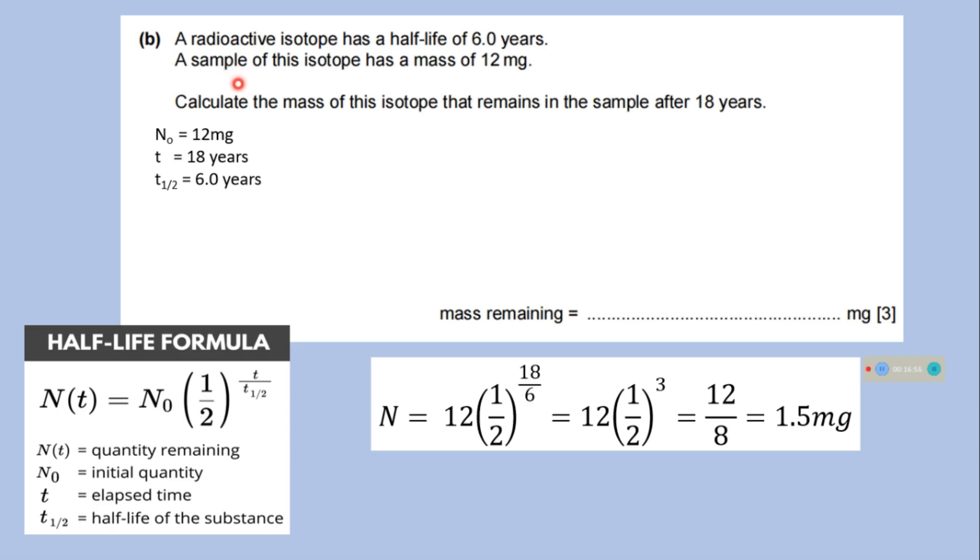A radioactive isotope has a half-life of 6 years. A sample of this isotope has a mass of 12 mg. Calculate the mass of this isotope that remains in the sample after 18 years. Here, we will apply this formula: N is equal to N0 1 by 2 to the power T divided by T half. Where N is quantity remaining, N0 is initial quantity, T is elapsed time and T half represents half-life of the substance. Here N0 is 12 mg, T is 18 years and T half, half-life of the substance is 6 years. Put all the values in the formula, we can calculate N. Here, N is 1.5 mg.